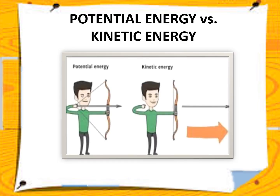Let's get to know more about potential energy and kinetic energy by looking at different diagrams. The first diagram shows a man on the left — the arrow has not been released yet, therefore it has potential energy. Once the arrow is released, the potential energy changes into kinetic energy, because the arrow is now moving.